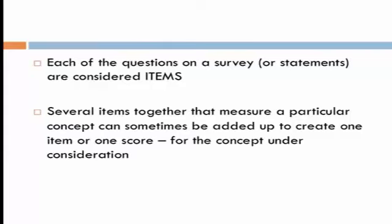Each of the statements or questions on a survey are considered items or variables. You'll hear phrases like 'items three through six measured studying habits,' which means the questions numbered three, four, five, and six. Sometimes you can take items together and add them up to create a total score. For example, if you had three questions asking how often somebody engages in a study habit — taking notes, highlighting, and reading — with higher numbers meaning more hours, you could tell Excel to sum those three items to create an overall score. You don't have to do that, but it is something researchers do.